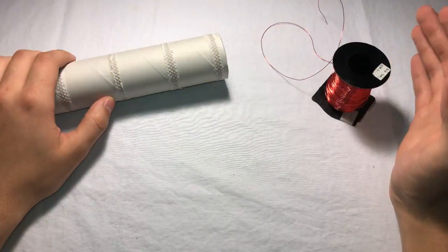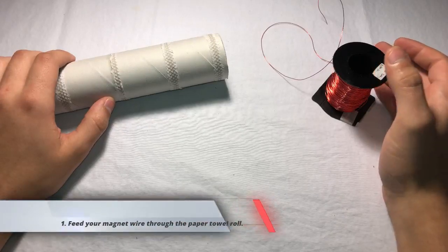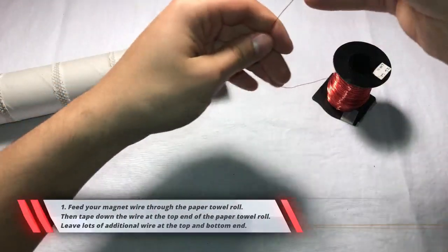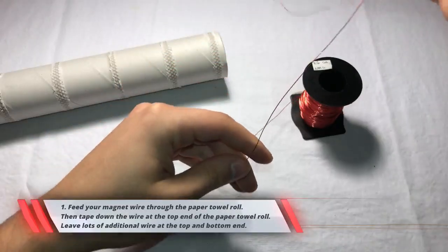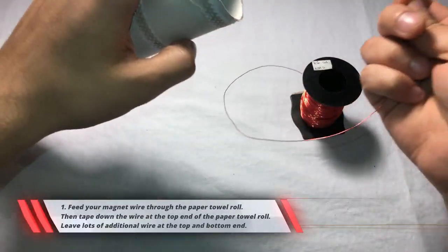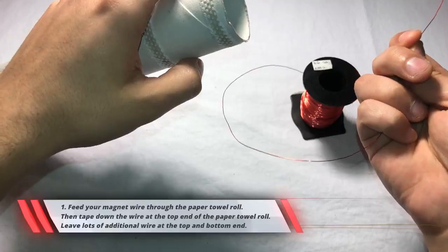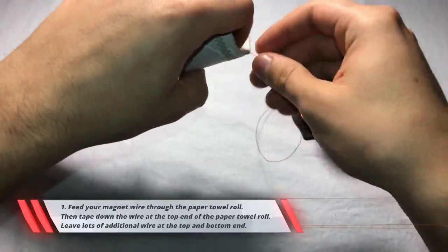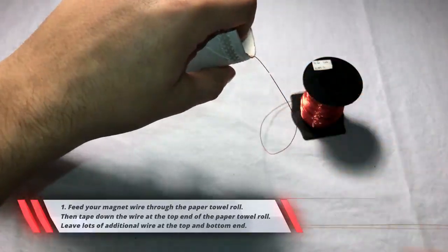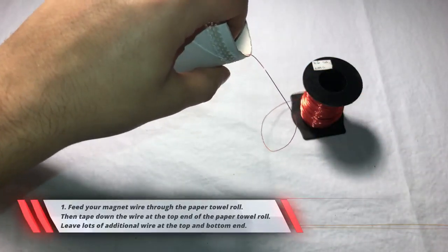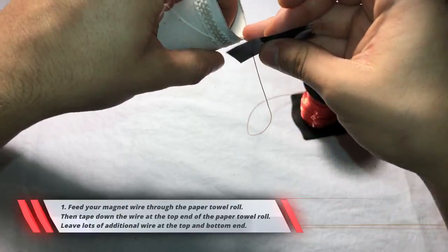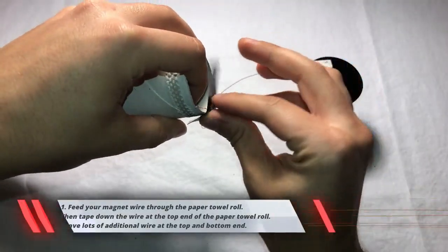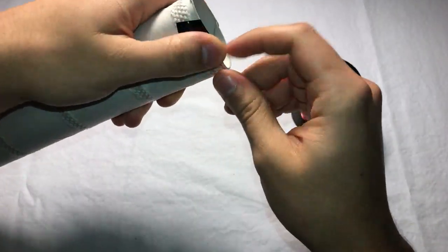So first we'll start off with winding our secondary coil. We'll start off by leaving a bunch left over so we have some room to play with after we're done winding it and then to connect it to the circuit. So one trick I like to do is just shove some of the extra wire in so then it's out of our way when we start winding. And then just tape it down. Wind the shot. Just tape that down there.